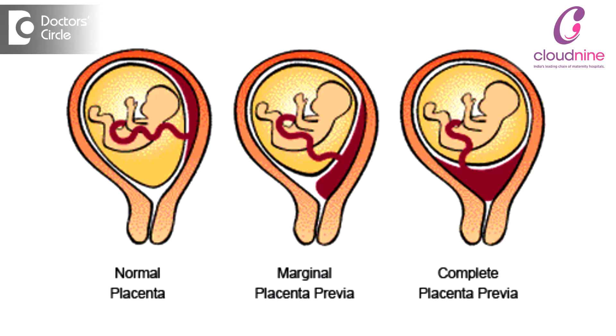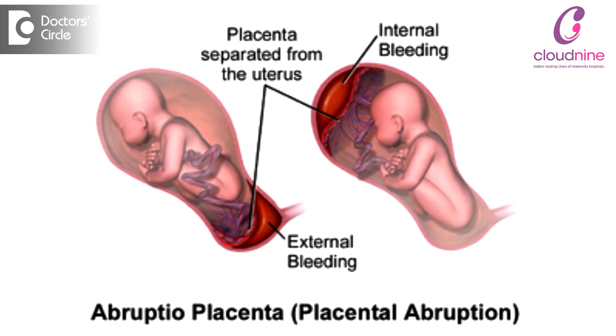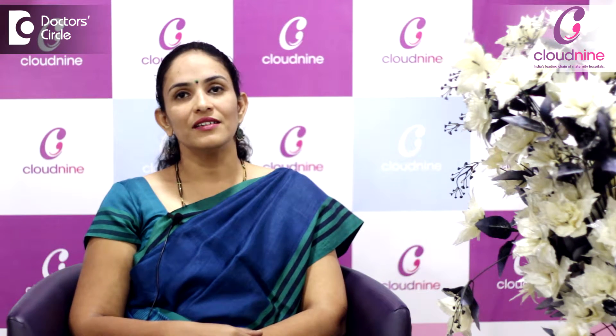Or the problem can be in the placenta — something like placenta previa or abruption of the placenta — which also contributes to a high risk pregnancy.